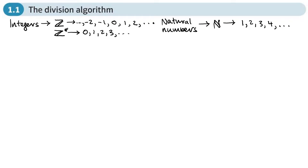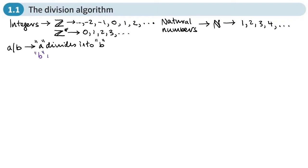If you see this notation — an integer a, then a vertical line, then an integer b — what this means is that a divides into b. You can think of this in different ways. One way of thinking about it is that b is a multiple of a. When we say one number divides into another like this, it means there's no remainder — it divides exactly.